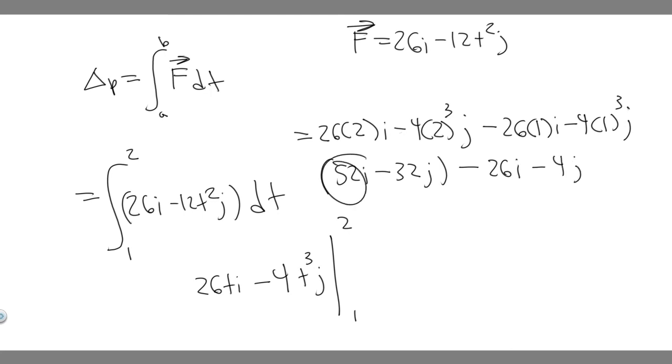So 52i minus 26i is just 26i, and then minus 32. Keep in mind, this is minus, I wrote this a bit wrong. I forgot the parentheses, so minus 26i. This is going to become a plus, so minus 32 plus 4 is just going to become minus 28. So 26i minus 28j.